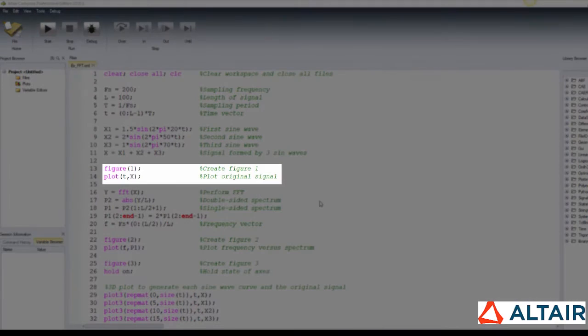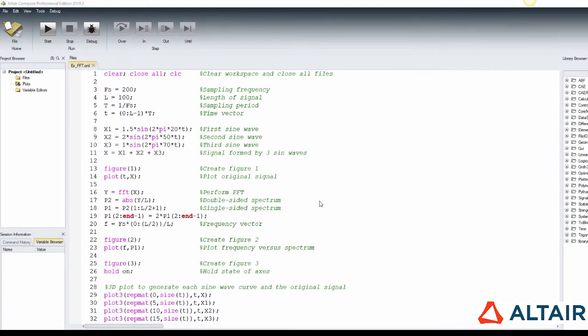Create a new figure and plot the time vector in the x-axis and the signal in the y-axis. And now, we are ready to perform the FFT itself.